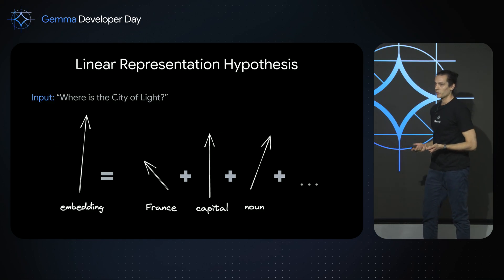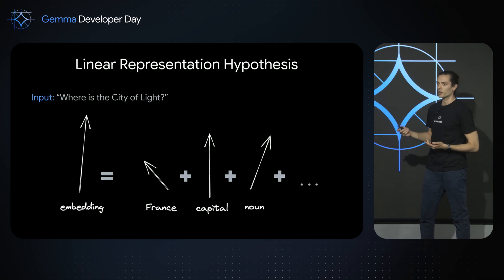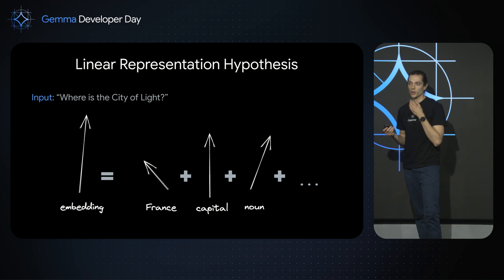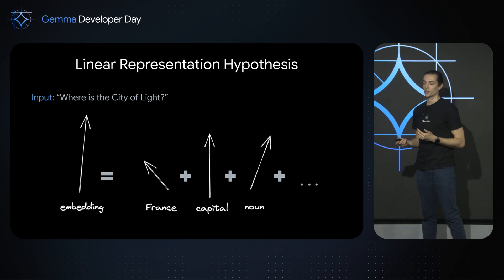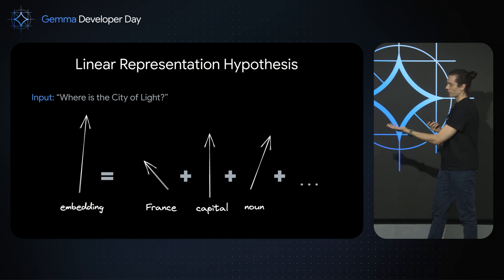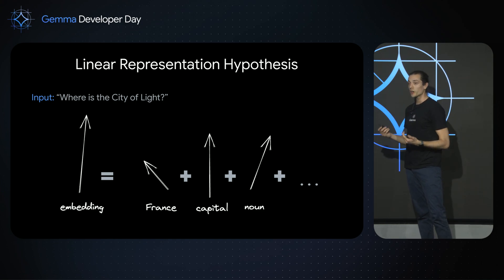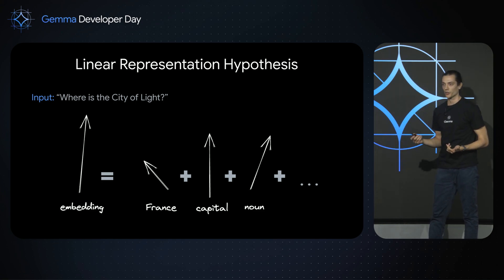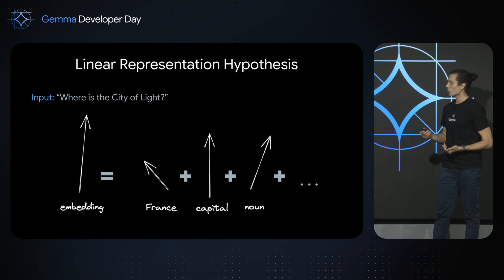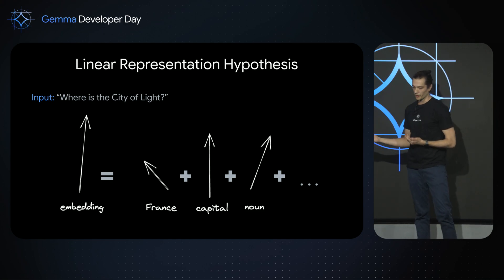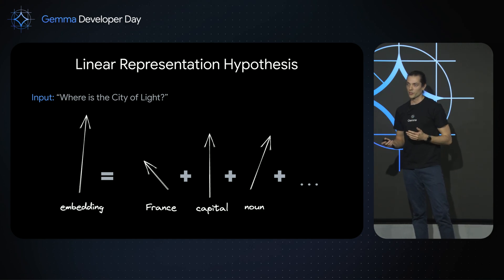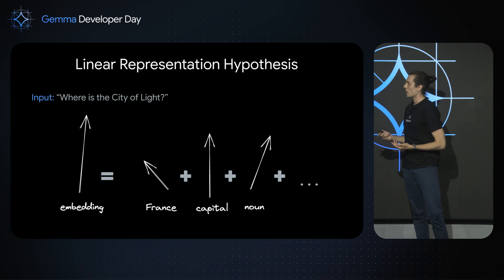The language model takes the input and processes it into an intermediate representation vector. We can think of this representation vector as being made up of a sparse linear combination of other vectors that correspond to human-interpretable concepts. This idea is also called the linear representation hypothesis.